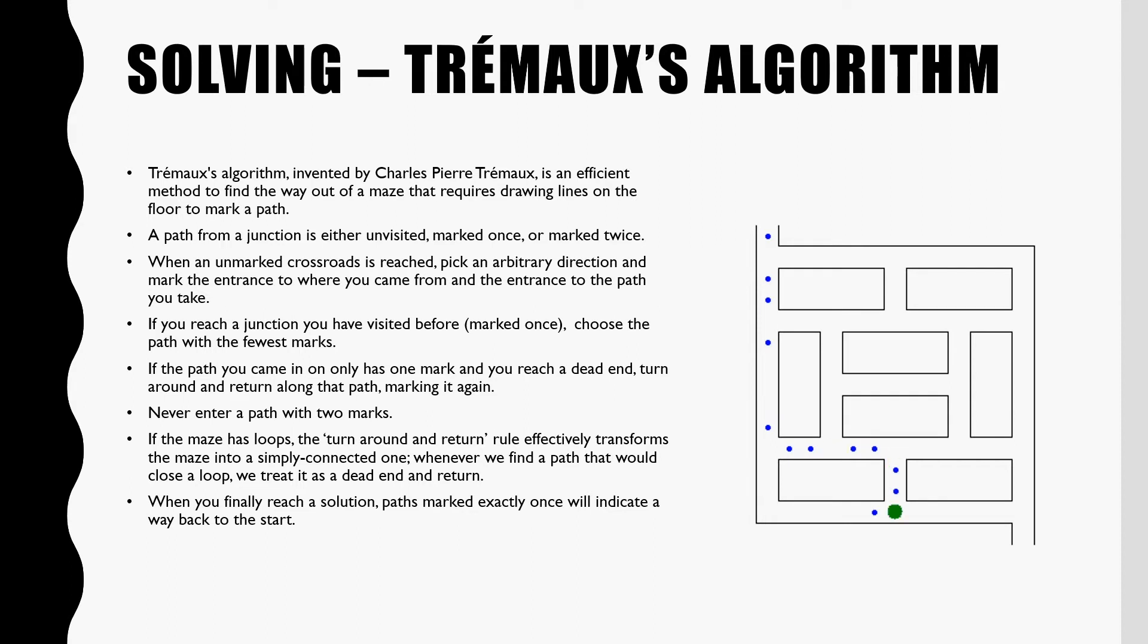If you reach an intersection you have visited before, meaning it is marked once, choose the path with the fewest marks. If the path you came in on only has one mark and you reach a dead end or a junction where all the paths have been marked once, turn around and return along that path, marking it again.